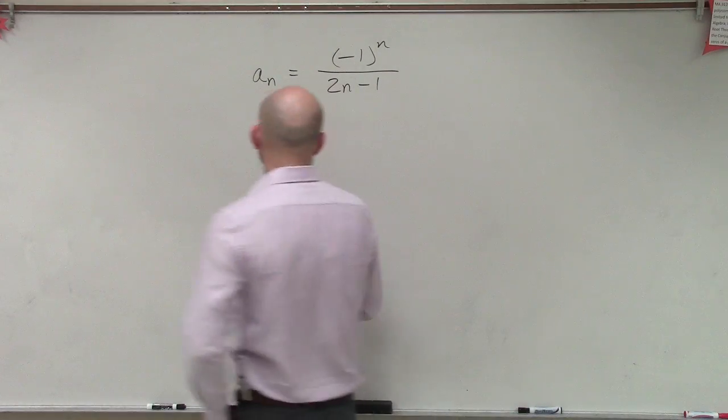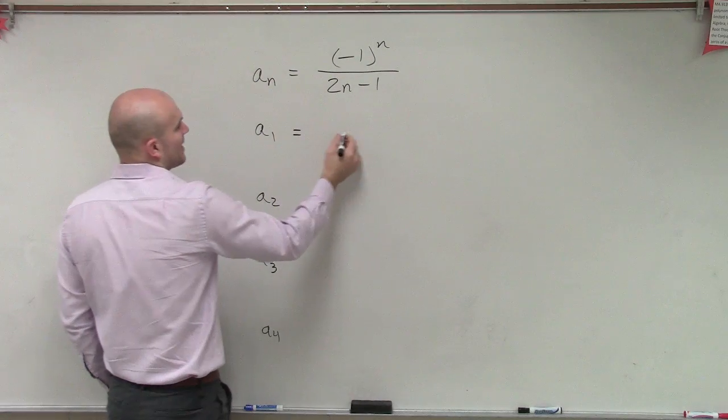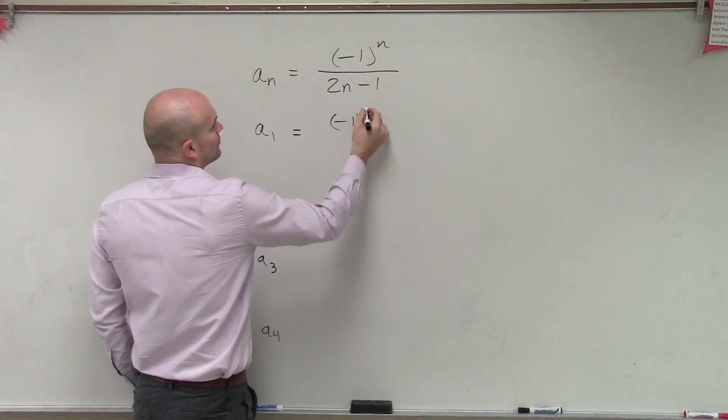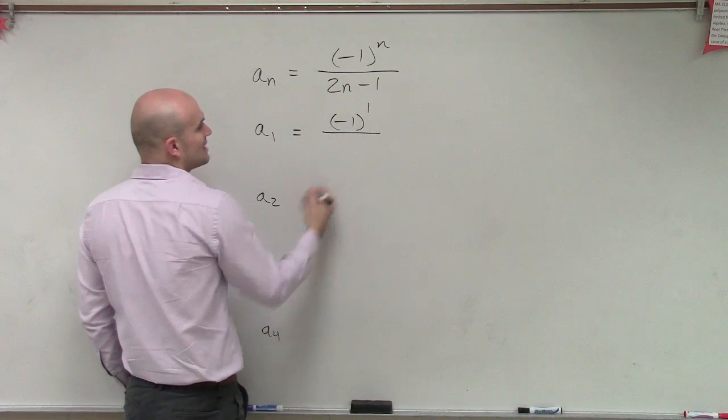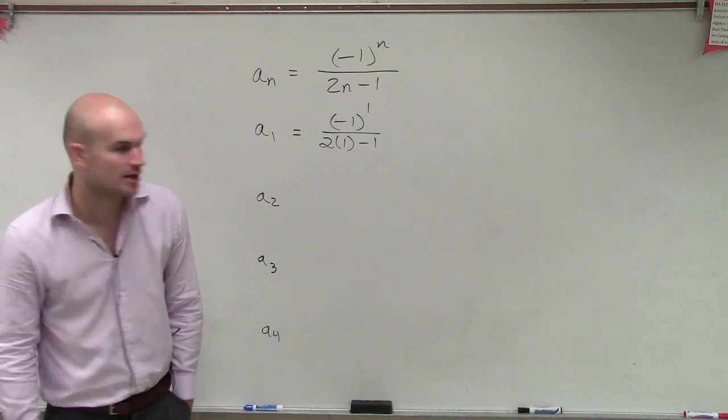So again, to do this, what we're simply going to do is plug in 1 for n. So in this case, we have negative 1 raised to the first power times 2 times 1 minus 1. And let's just evaluate this as we go.